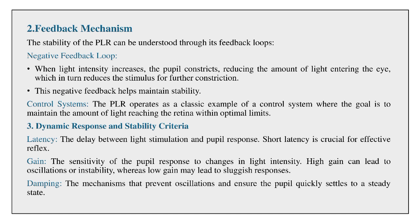Dynamic response and stability criteria: Latency refers to the delay between light stimulation and pupil response — short latency is crucial for an effective reflex. Gain is the sensitivity of the pupil response to changes in light intensity; high gain can lead to oscillations or instability, whereas low gain may lead to sluggish responses. Damping refers to the mechanisms that prevent oscillations and ensure the pupil quickly settles to a steady state.